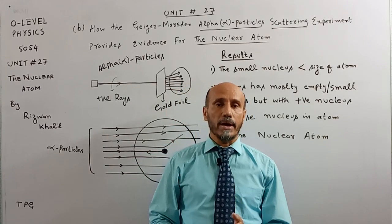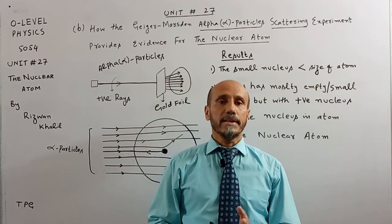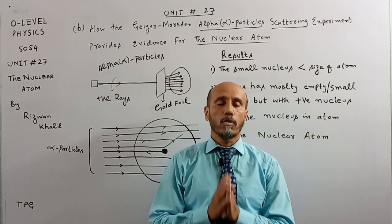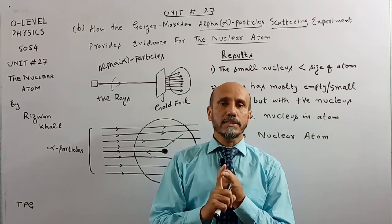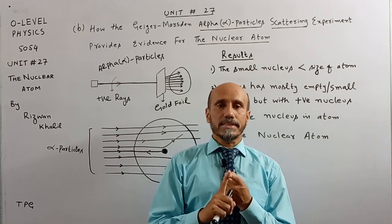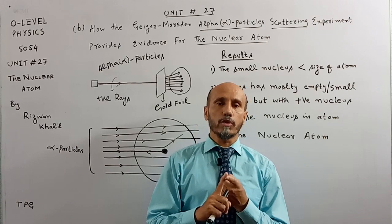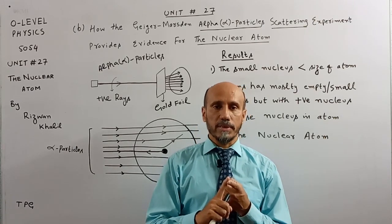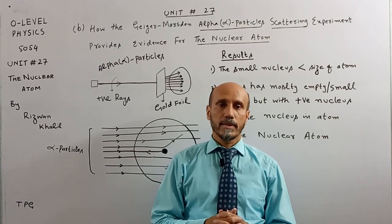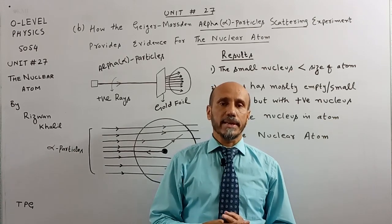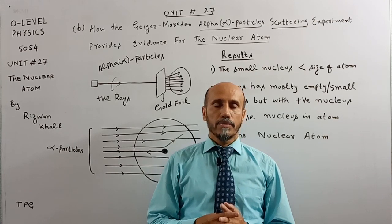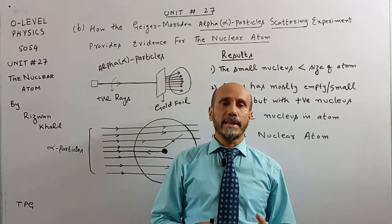These two scientists performed the alpha particles scattering experiment to provide evidence for the existence of the nucleus. After observing the scattering of alpha rays thrown on gold foil, they concluded: the nucleus is of smaller size than the atom; the atom consists of mostly empty spaces; there exists a small dense nucleus carrying positive charge; and there exists a nuclear atom. We will now move towards learning outcomes A and C.